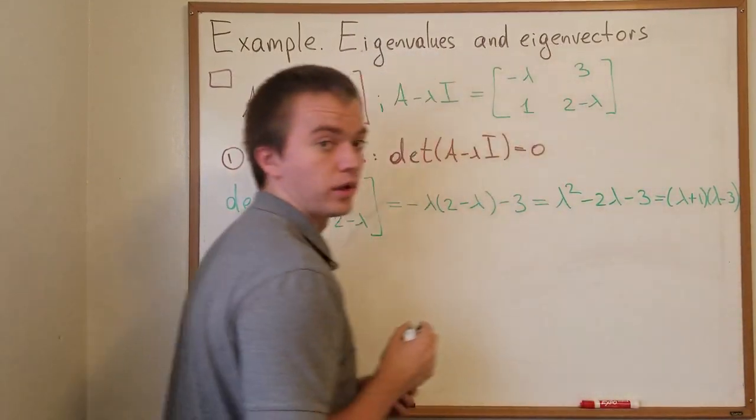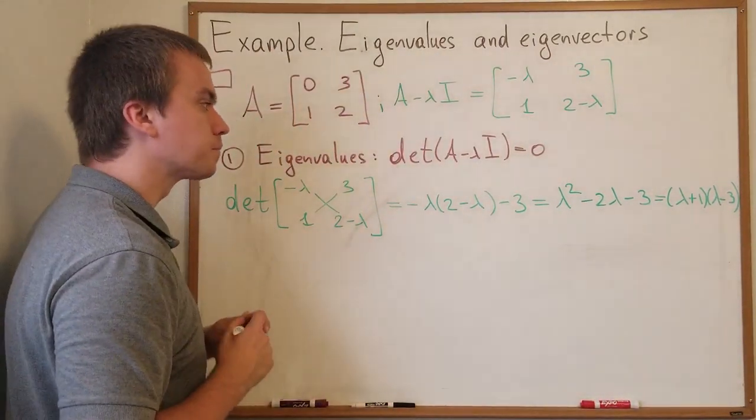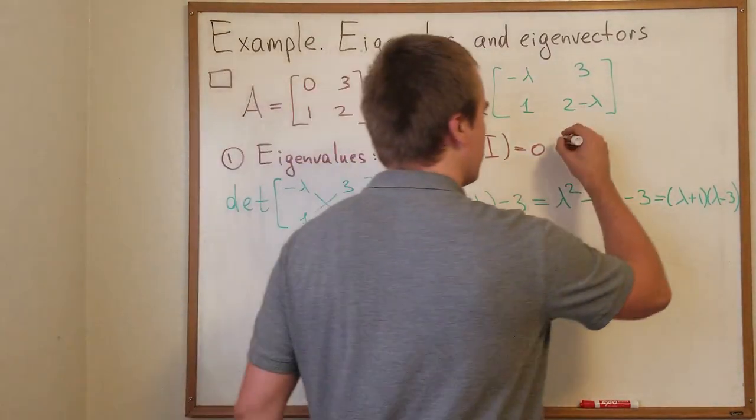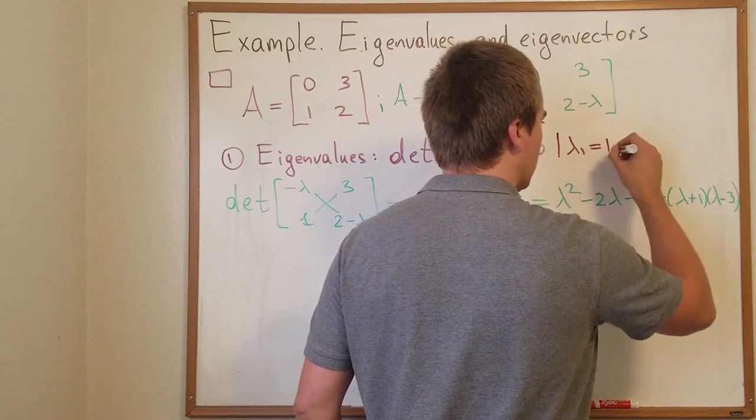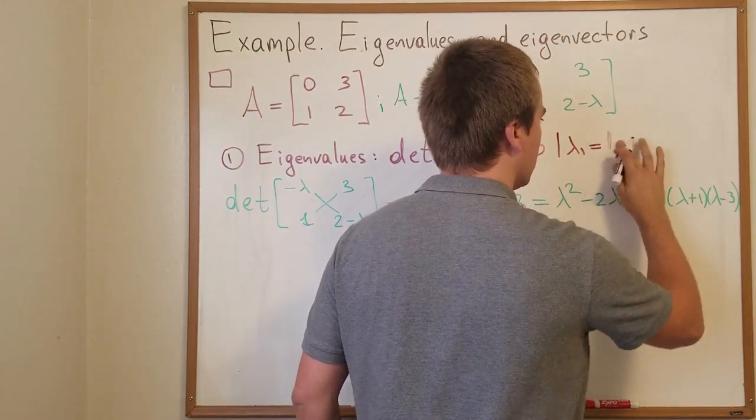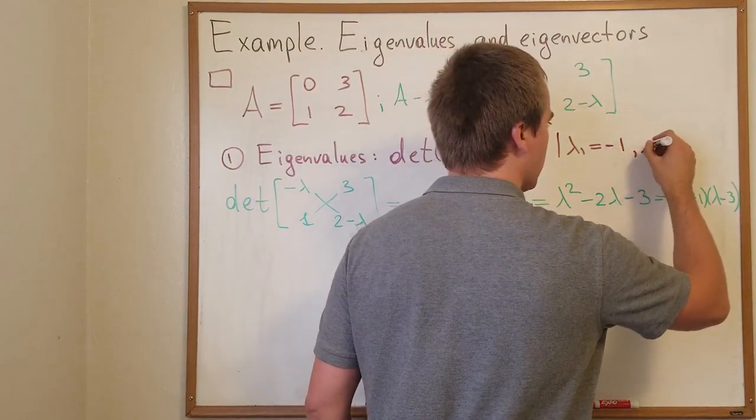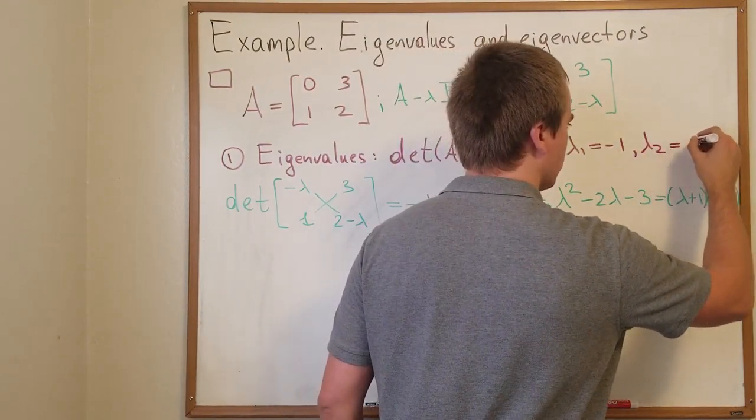Sorry, plus 1. Okay. So from here we get that our eigenvalues are going to be lambda 1 equals to negative 1 and lambda 2 equals to 3.